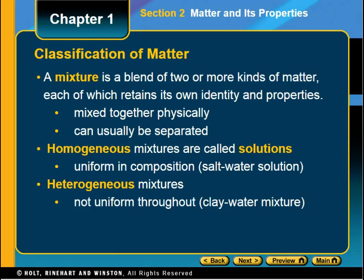A couple other words about matter — we can classify matter. We were classifying it as solid, liquid, gas, or as a physical or chemical substance. We can also classify matter as a mixture. When we have a mixture, we have multiple things put together but they're not chemically combined — a blend of two or more types of matter that still retain their own properties. Mixtures are easy to describe in everyday life. A salad, for example: you put lettuce, tomatoes, cheese, croutons together and you can still taste a tomato or a carrot — they are not changed by being in the salad bowl.